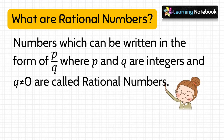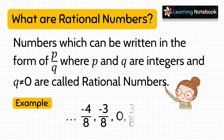What are rational numbers? Numbers which can be written in the form of p upon q, where p and q are integers and q is not equal to zero, are called rational numbers. Examples include minus 4 upon 8, minus 3 upon 8, 0, 3 upon 8, and so on.